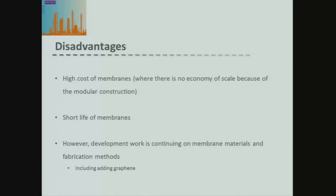So there are two reasons why membranes aren't as popular as they potentially should be in industry. However, there's a lot of work looking at developing membranes for industrial use — new fabrication methods and new materials. Currently, there's research at Manchester looking at adding graphene to membrane materials to give that strength to the membrane material, allowing it to be more resilient and not have to be changed as often.